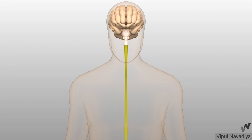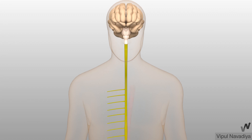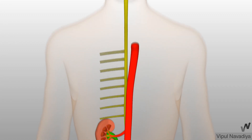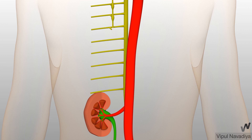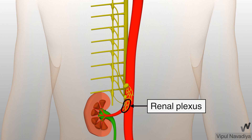Now, nerve supply. Kidneys receive only sympathetic nerves — there is no parasympathetic innervation. Sympathetic fibers come from the thoracolumbar outflow. From there, they pass through various plexuses and ganglia and form the renal plexus near the renal artery. Finally, fibers from the renal plexus innervate the kidney.